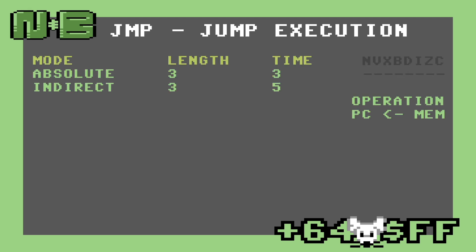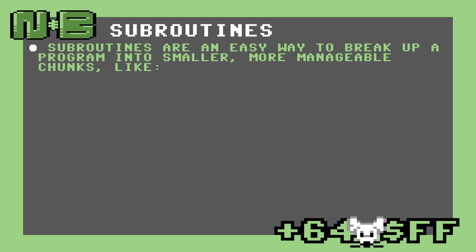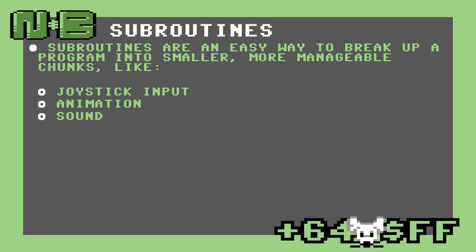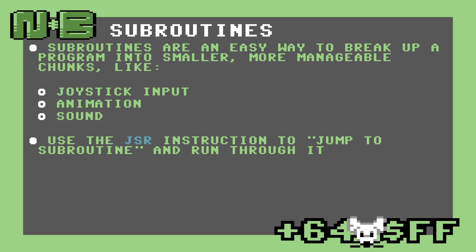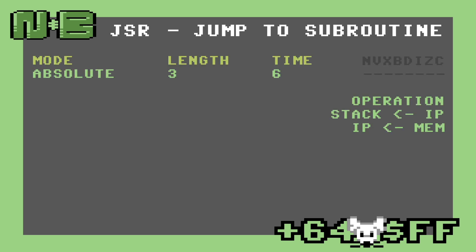In terms of execution time, JMP is relatively quick in absolute mode, but indirect mode takes an extra two cycles for the indirect fetch. We've implicitly covered subroutines before, but let's go over them in a little more detail. Subroutines are an easy way to break up a program into smaller, more manageable chunks, such as joystick input, animation, and sound. These chunks of code are jumped to using the JSR instruction. This is similar to JMP, but is bi-directional, and allows for returning to the point after the JSR instruction was encountered. This is because JSR implicitly pushes the return address onto the stack for later use with the RTS instruction. JSR, unlike JMP, only supports absolute addressing.